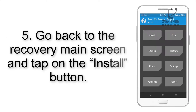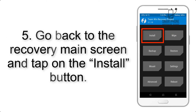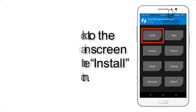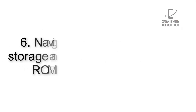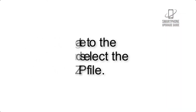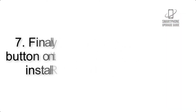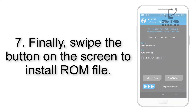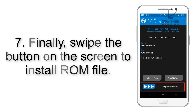Step 4: Swipe the button to wipe the device. Step 5: Go back to the recovery main screen and tap on the Install button. Step 6: Navigate to the storage and select the ROM zip file.